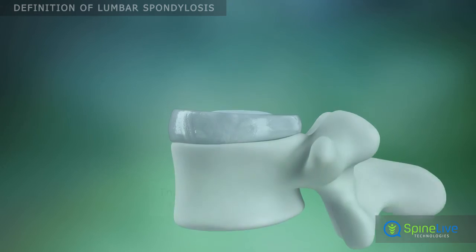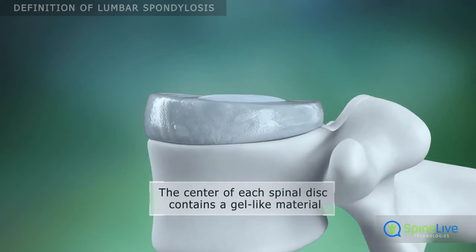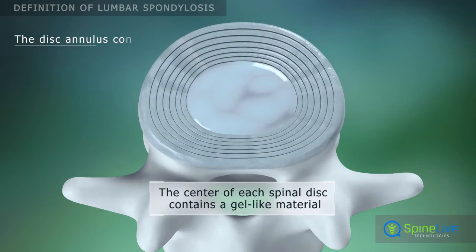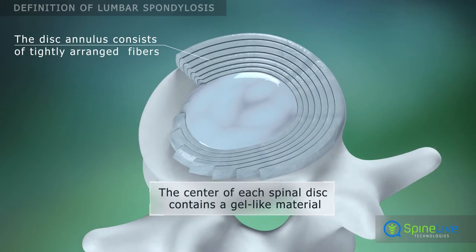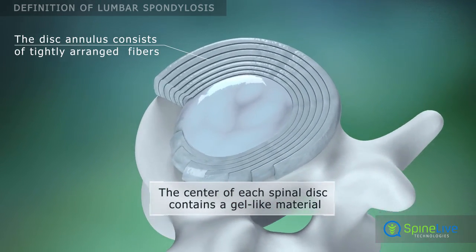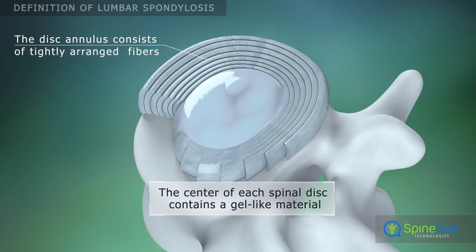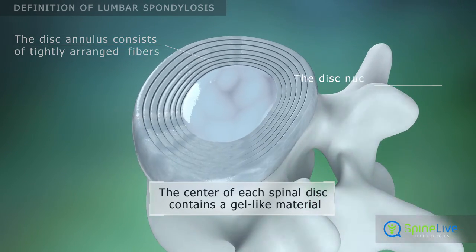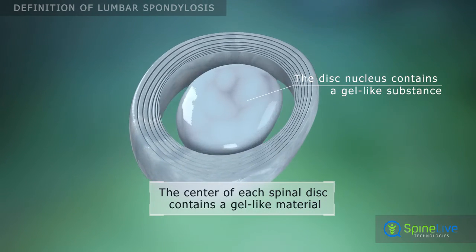Each spinal disc has a tough outer shell called the annulus. The center portion of the disc, the nucleus, contains a gel-like substance.